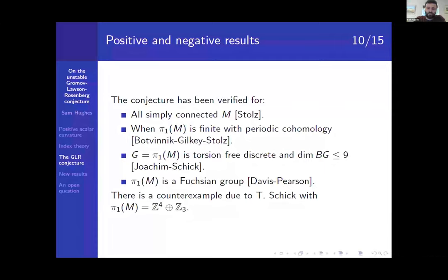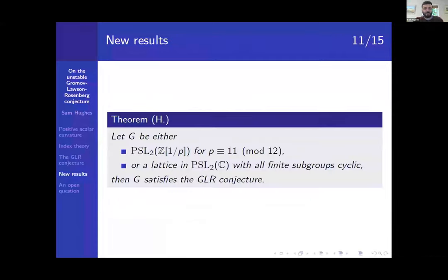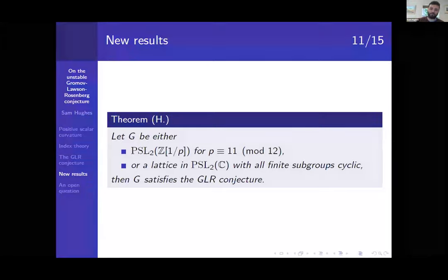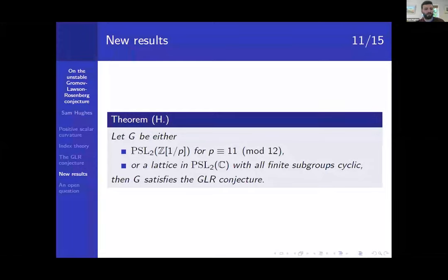So if I had more time, I would talk about Thomas Schick's example, cause it's really nice, but unfortunately I don't. So my little add-on to this is if G is either PSL₂(ℤ[1/p]) for p congruent to 11 mod 12, or a lattice in PSL₂(ℂ) with all finite subgroups cyclic, then G also satisfies this conjecture. So if you take a manifold with one of these fundamental groups, dimension at least five, then you can just look at this K real K group. And you can look at the image of this class through a bunch of maps, which you can work out quite explicitly. And then if this class vanishes, then you know that these groups admit a metric of positive scalar curvature. So for a really simple example, if you take any manifold with dimension congruent to three or five mod eight, then the manifold will admit a metric positive scalar curvature if its fundamental group is PSL₂(ℤ[1/p]). So that's kind of a quick application of this theorem.